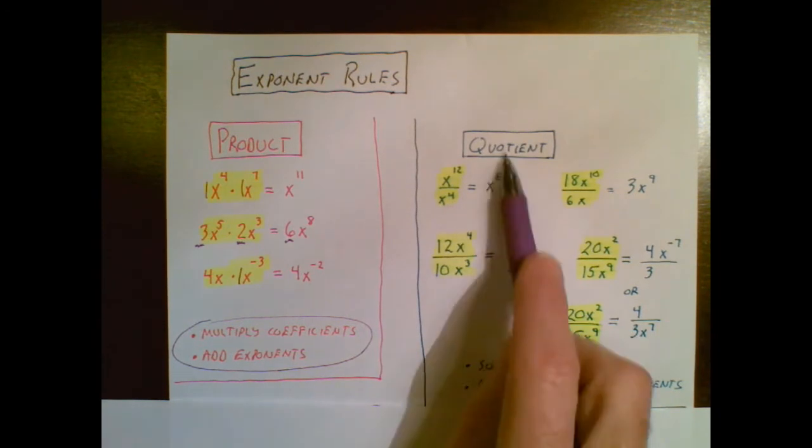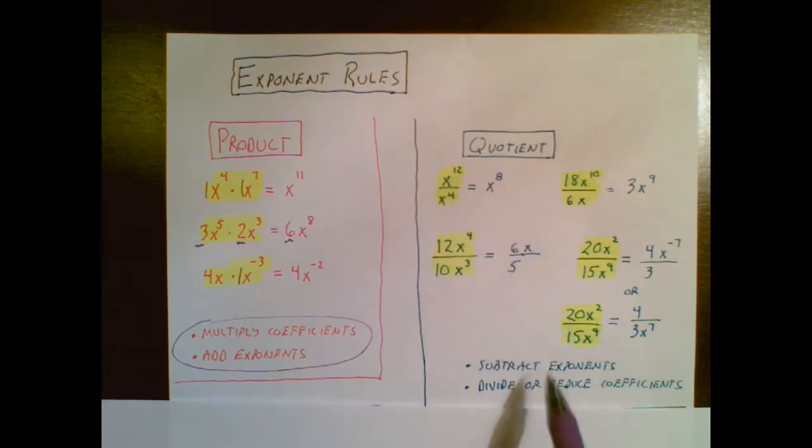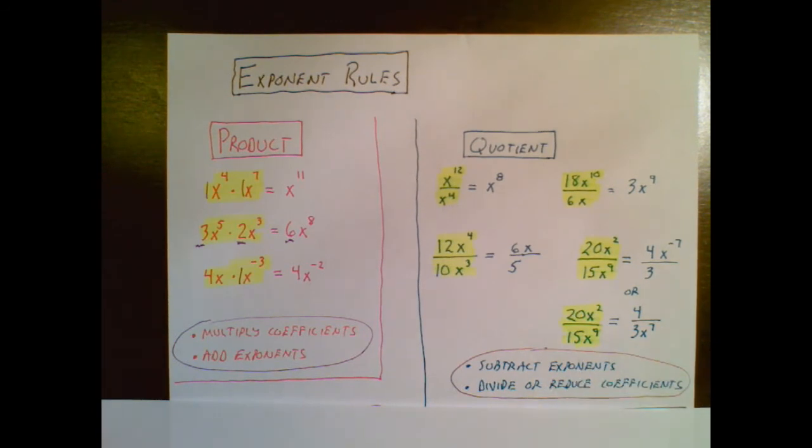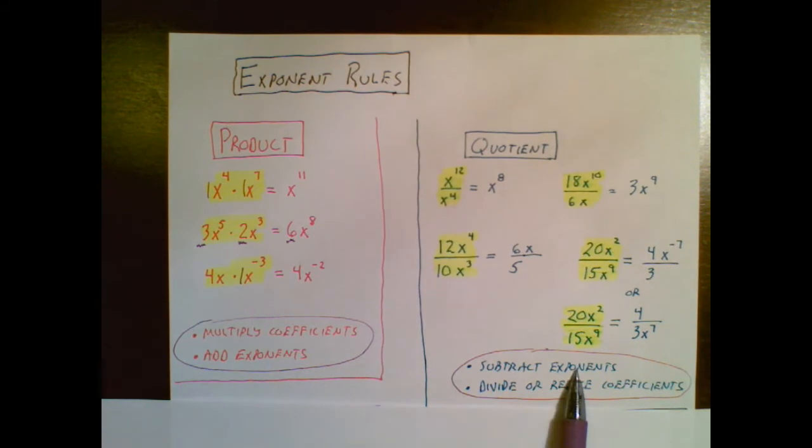So we move along to quotient or division. You've got two bullet points if you're going to make a sheet that summarizes the rules. These are the rules for the quotient or dividing.